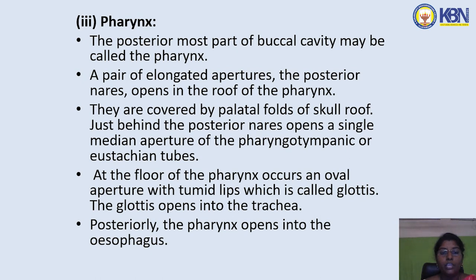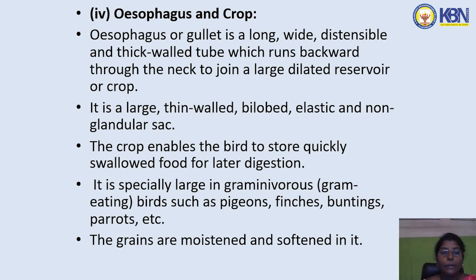A pair of elongated apertures, the posterior nares, open into the roof of the pharynx, covered by palatal folds. Just behind the posterior nares opens a single median aperture of the pharyngeal tympanic or Eustachian tubes. At the floor of the pharynx occurs an oval aperture with tumid lips called the glottis. The glottis opens into the trachea. Posteriorly, the pharynx opens into the esophagus.